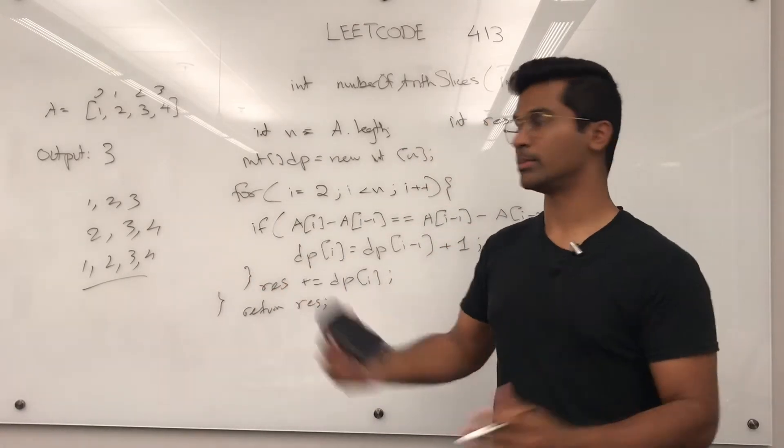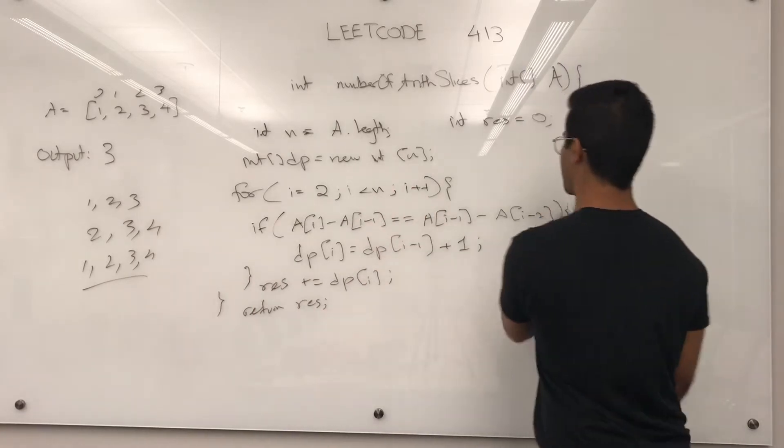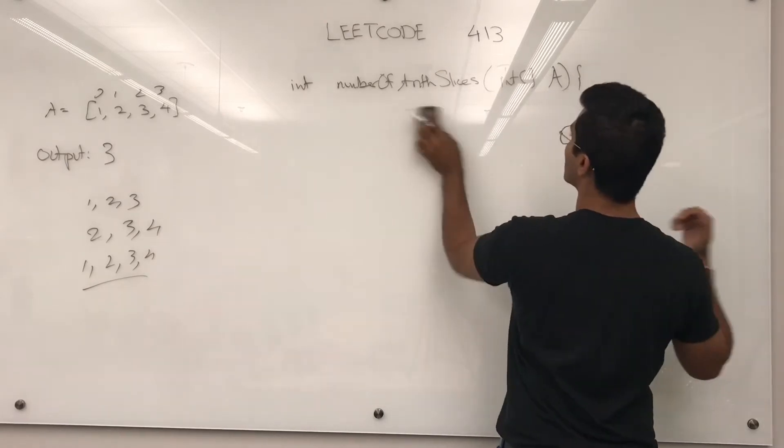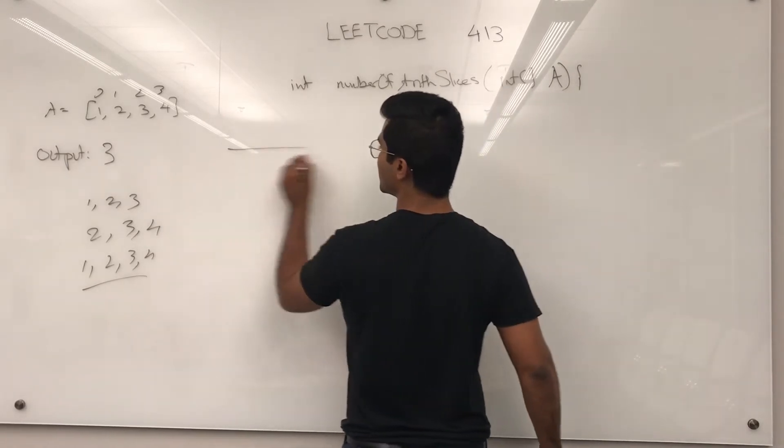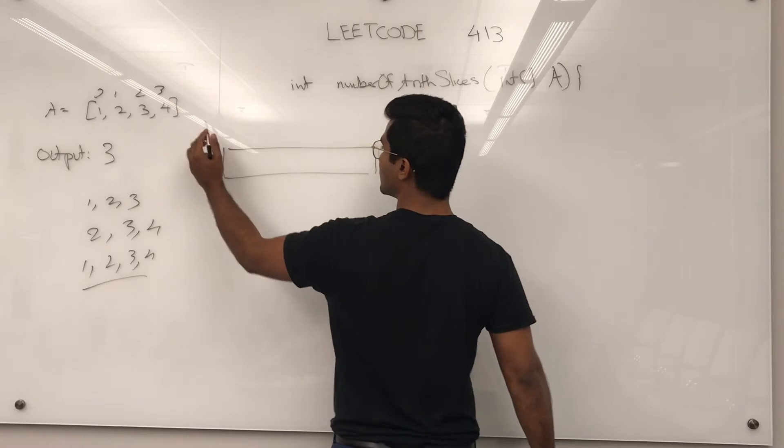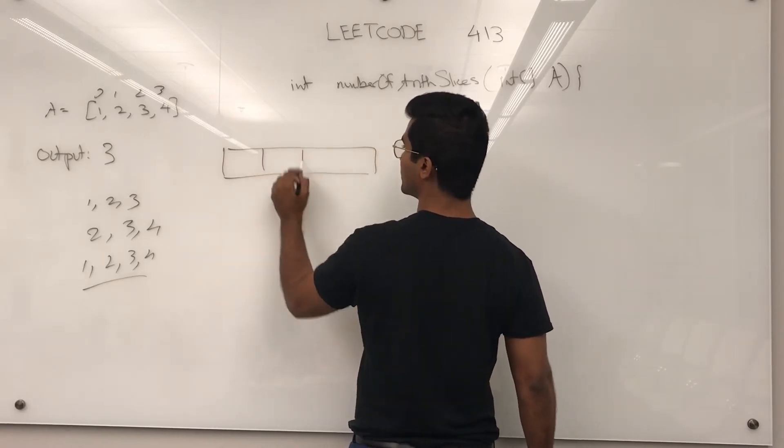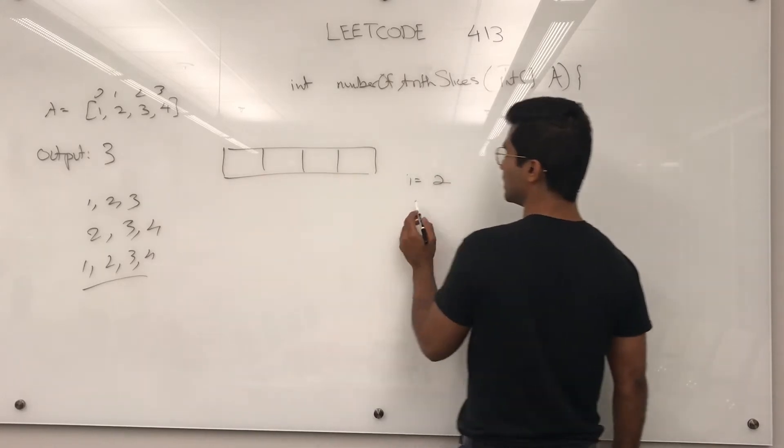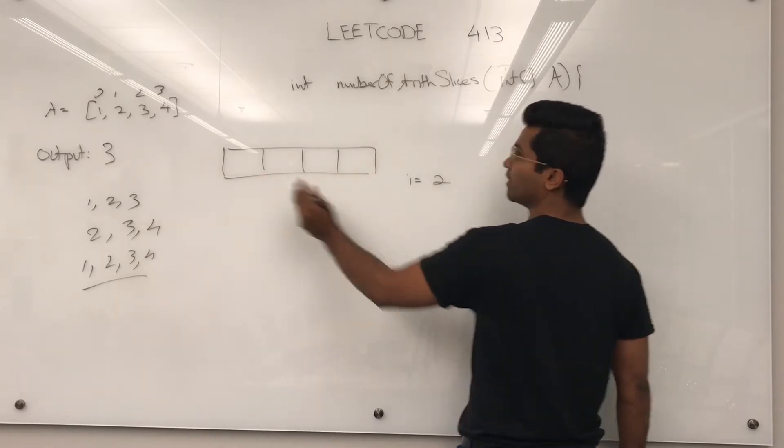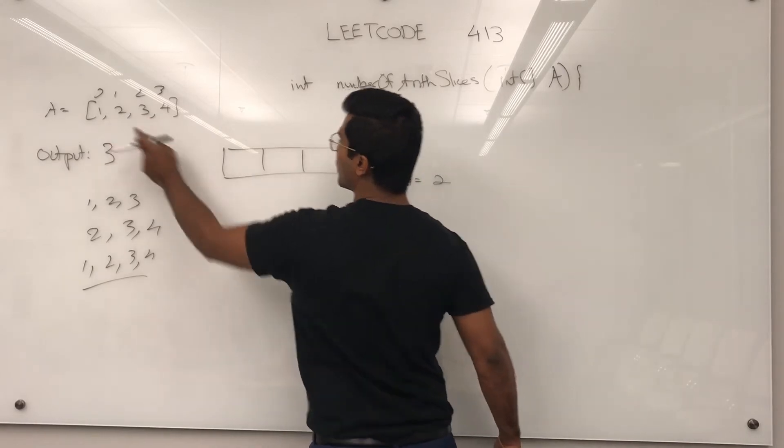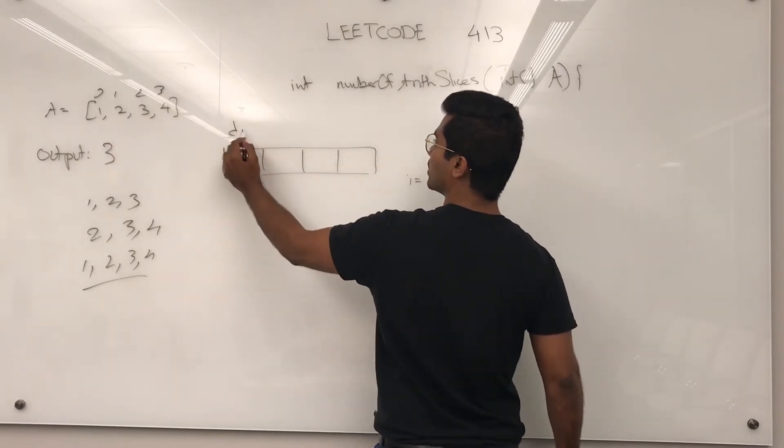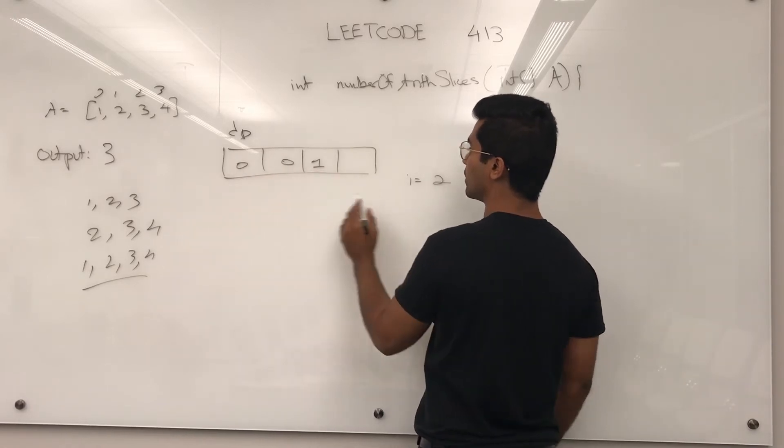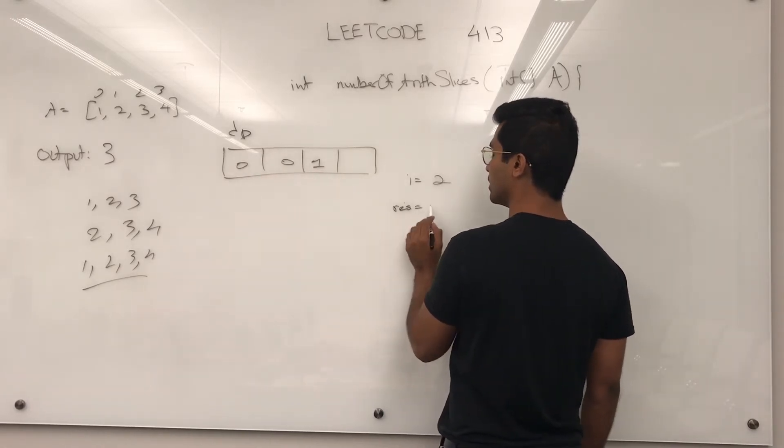Let me actually write the DP array out when this code is ran. So DP is going to look like this, when one, two, three, so when i is equal to 2, 3 minus 2 is the same as 2 minus 1, so DP of 2 is going to be this guy plus 1, and res is incremented by 1.